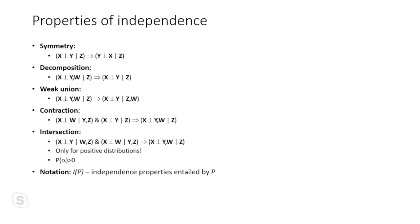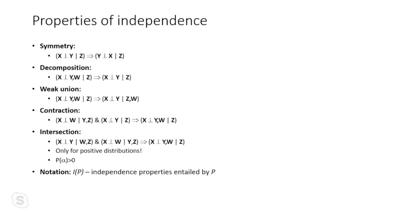Independence properties are symmetric: X independent of Y given Z is the same as Y independent of X given Z. You can decompose: if X is independent of (Y, W) given Z, then X is independent of Y given Z. There's also weak union and contraction — intersection holds only for positive distributions where P(α) > 0. We use the notation I(P) to denote the independence properties entailed by P.